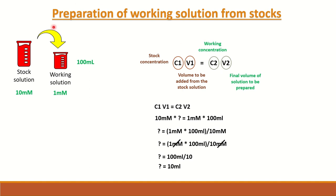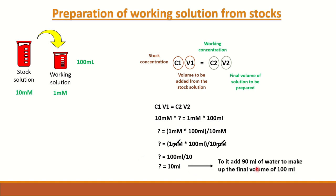So for preparing this 1 millimolar concentration solution of 100 ml, what we have to do is add 10 ml from the stock solution, and the remaining 90 ml will be your water — or you can use any diluent, such as DMSO or any other diluent. To prepare 100 ml of 1 millimolar working concentration from a 10 millimolar stock, you need to add 10 ml of the stock solution to 90 ml of your diluent, and then you will get the concentration of 1 millimolar.